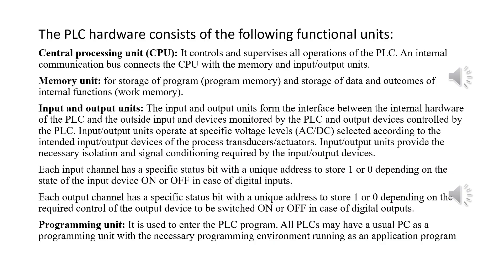The central processing unit is responsible for controlling and supervising all the operations of the PLC, and it is connected to the other parts of the PLC through a communication bus. The memory unit for storage of the program is called program memory, and for storage of data and outcomes of internal functions during program execution, it is called work memory. The input and output units are the modules that provide the required interface between the internal hardware of the PLC and the outside world of input and output devices.